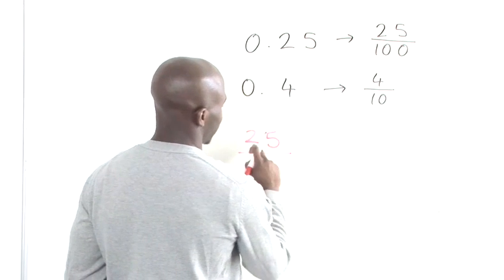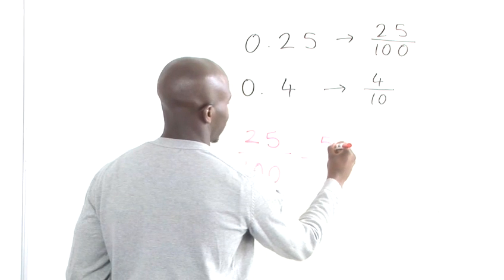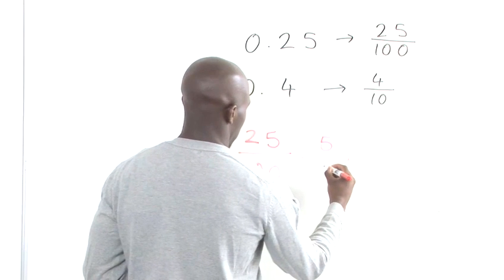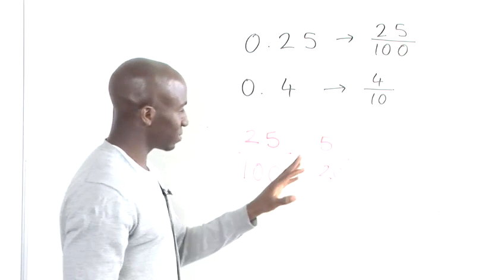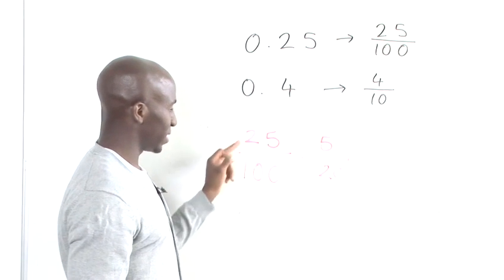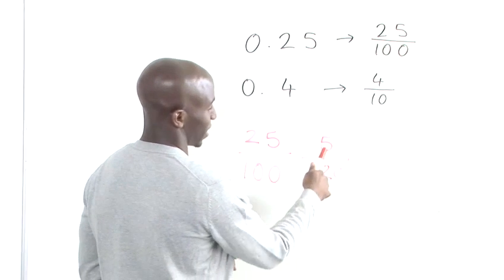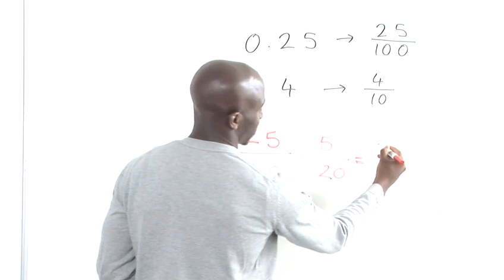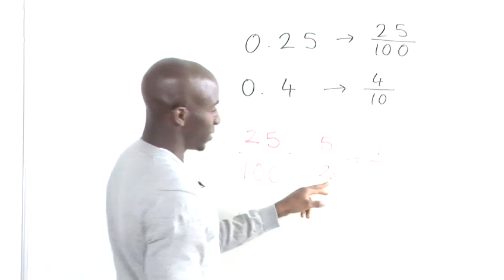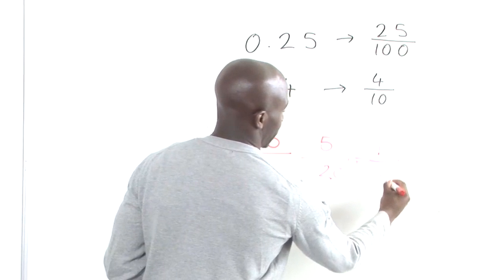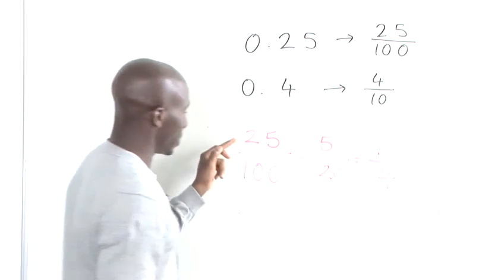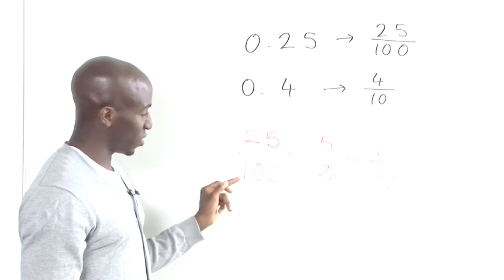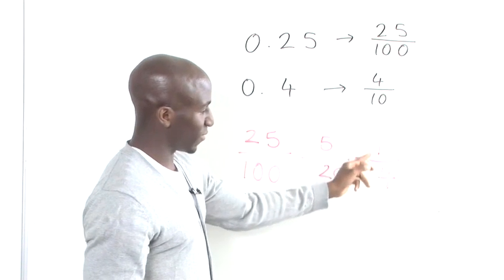We can divide again by 5: 5 divided by 5 gives us 1, and 20 divided by 5 gives us 4. So the simplified fraction is 1 over 4 — a quarter. Remember: 25 goes into 100 four times, so 0.25 is one quarter.